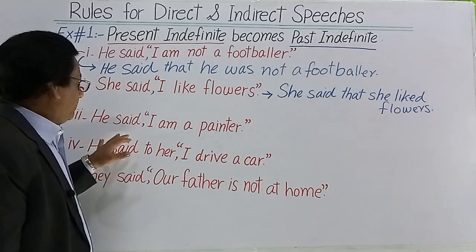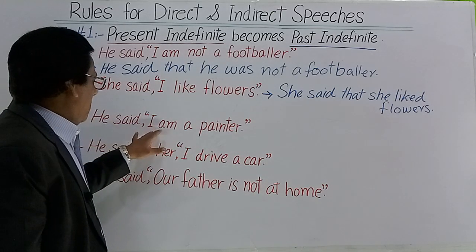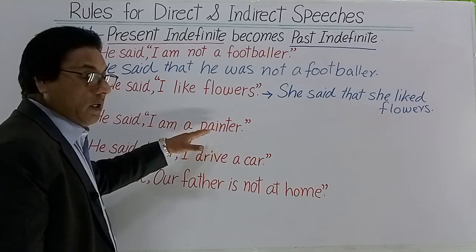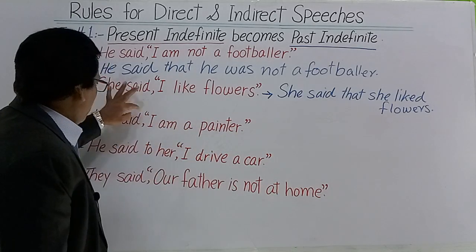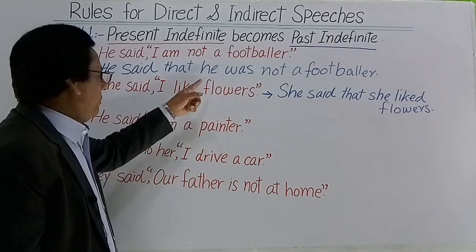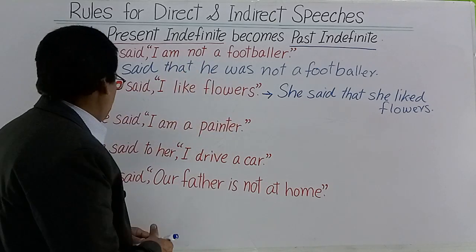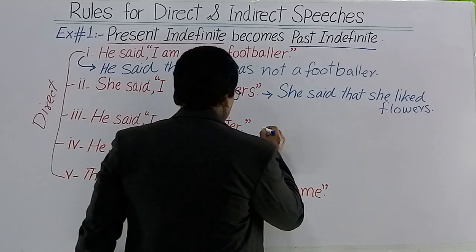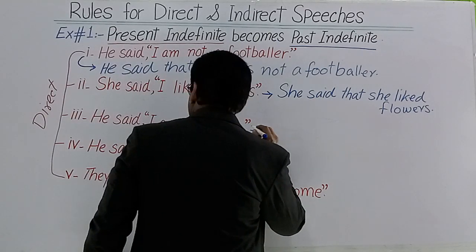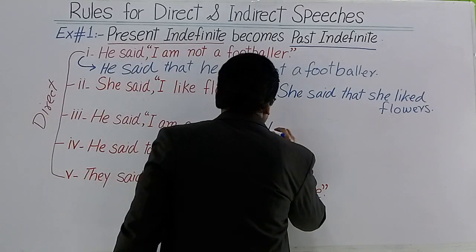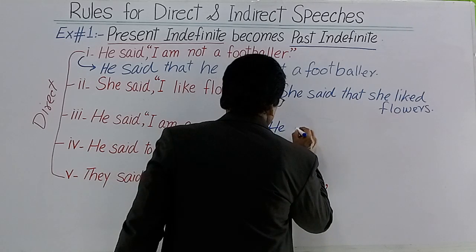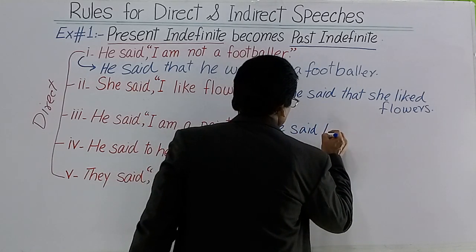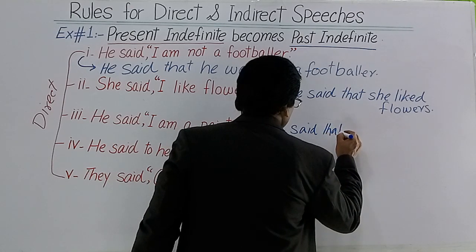اب تیسرا: Direct speech میں — He said, 'I am a painter.' میں ایک painter ہوں — inverted commas میں لکھا ہوا، یہ سب direct speech ہے۔